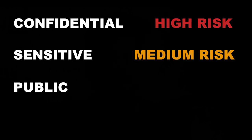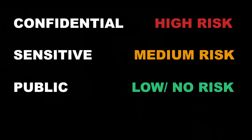The most common levels of classification that data gets put into are confidential, sensitive, or public — or more commonly referred to as high risk, medium risk, and low risk, or no risk.